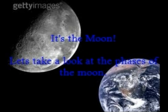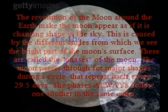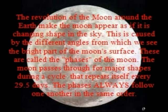Let's take a look at the phases of the moon. The revolution of the moon around the Earth makes the moon appear as if it changes shape in the sky. This is caused by the different angles from which we see the bright part of the moon's surface. These are called the phases of the moon. The moon passes through four major shapes during a cycle that repeats itself every 29.5 days. The phases always follow one another in the same order.